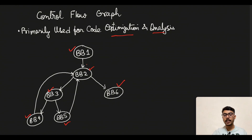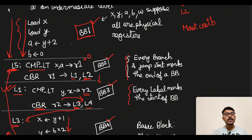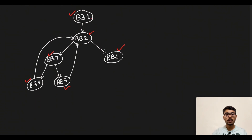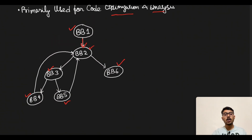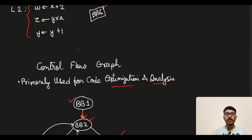Now we need to assign the arrows. Looking at BB1: once we are in BB1 we can only go to BB2 — there is no other basic block we are branching or jumping into. So there will be only one arrow from BB1 to BB2, and we draw that line.